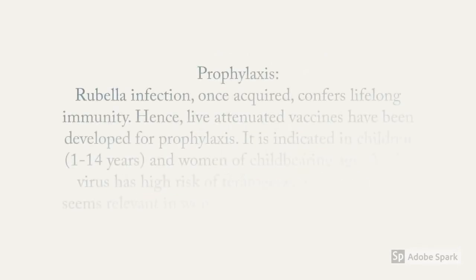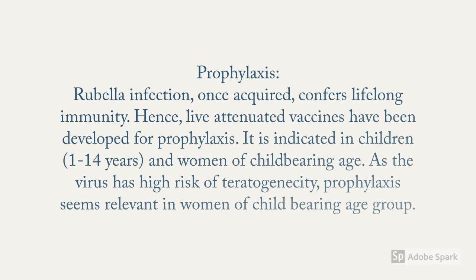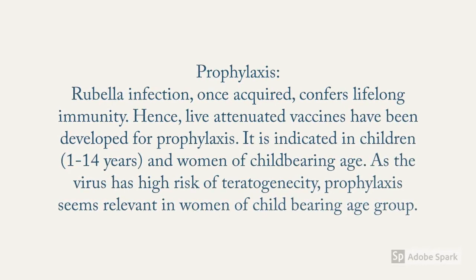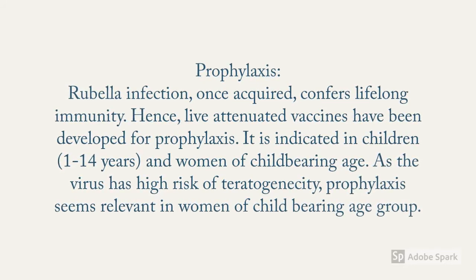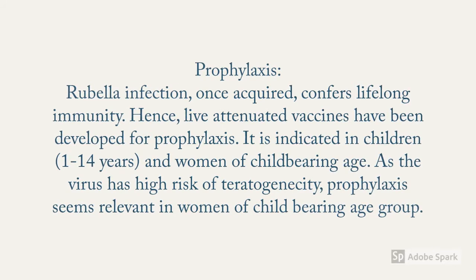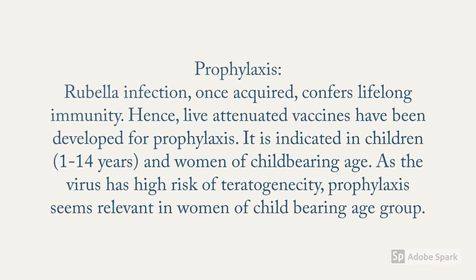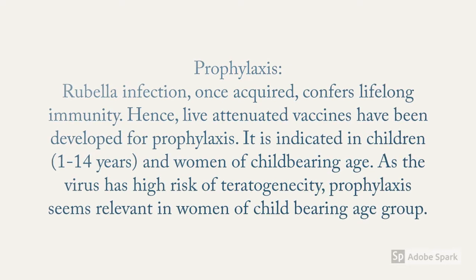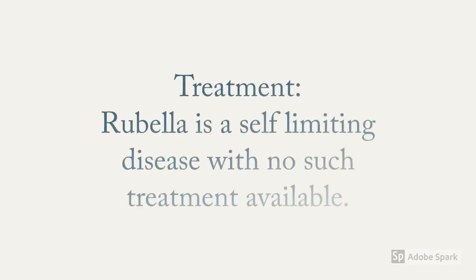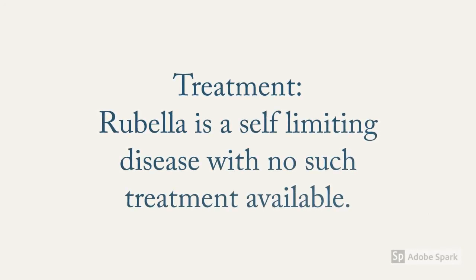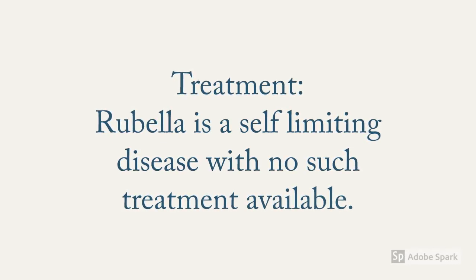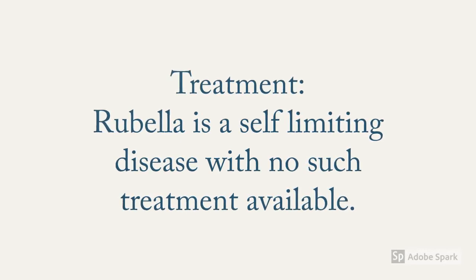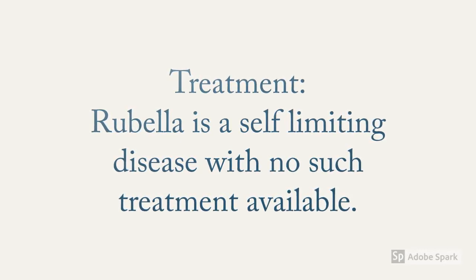Rubella infection, once acquired, confers lifelong immunity. Live attenuated vaccines have been developed for prophylaxis, indicated in children and women of childbearing age, given the virus's high teratogenicity. It is important to note that this vaccine is contraindicated during pregnancy. Treatment is only supportive, with plenty of fluid intake and paracetamol for reducing fever, as rubella is a self-limiting disease. Prophylaxis through vaccination is therefore preferable to treating the disease.